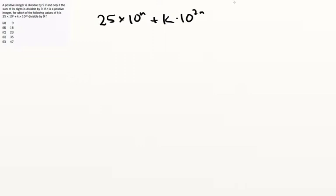Now, if n is a positive integer, for which of the values of k is 25 times 10 to the n plus k times 10 to the 2n, divisible by 9? So the question here is, what are the digits of the final number going to be? And the nice thing about this is that we can ignore this 10 to the n because this doesn't affect digits. It's only going to affect the decimal place or the number of zeros. Same here. This doesn't affect digits.